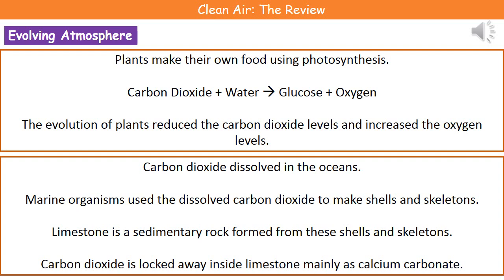When we think about how we got to the atmosphere we have today — with 21% oxygen — from that carbon dioxide atmosphere, we need to think about what brought about those changes, and the key thing is plants. Plants make their own food using photosynthesis, and the word equation for that process is: carbon dioxide plus water makes glucose and oxygen. As plants started to evolve, they reduced the levels of carbon dioxide and increased the levels of oxygen.